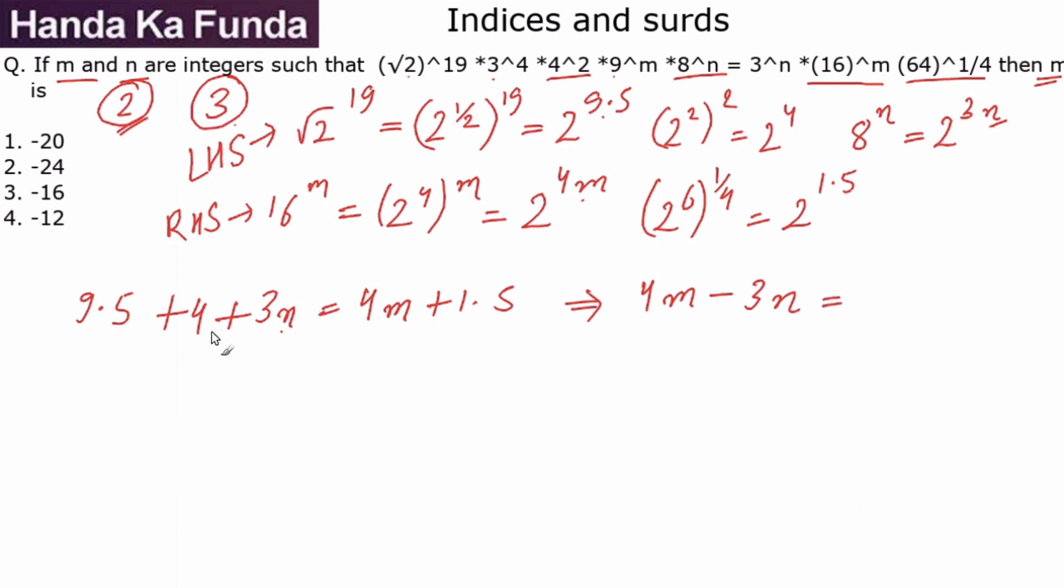On the other side, I will have 9.5 plus 4 is 13.5, minus 1.5 or 12. So now I have one equation in m and n with the help of very simply the powers of 2. I will apply the same logic and figure out the powers of 3.